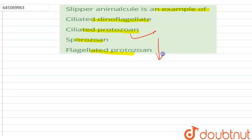option here is ciliated protozoan, as slipper animalcule is a common name of a ciliated protozoan of the genus Paramecium.